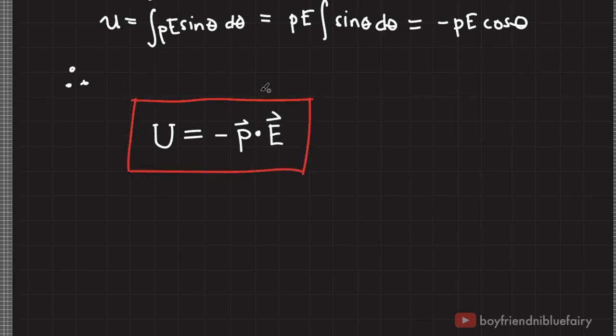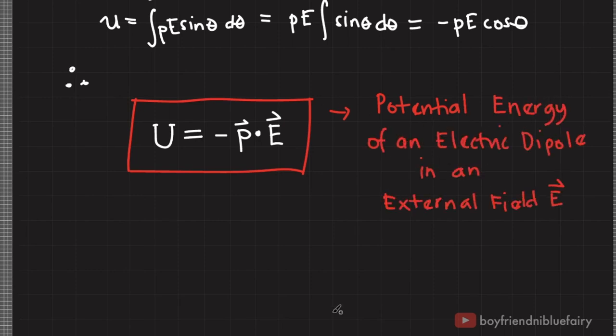This expression gives us the potential energy associated with an electric dipole situated in a region with electric field E.